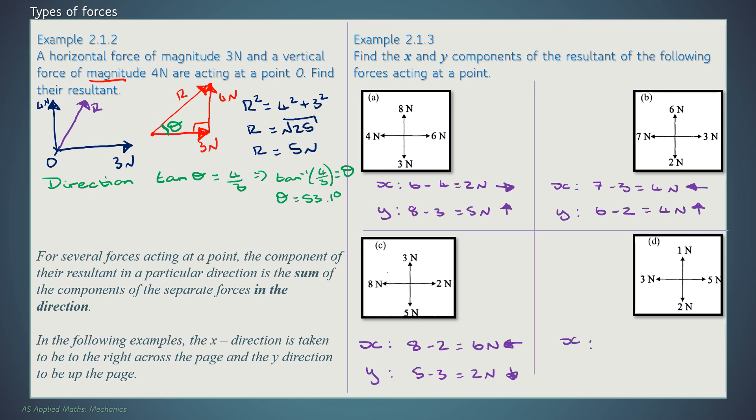Part D, 5 minus 3, 2 Newtons right. 2 minus 1 is 1 Newton down.